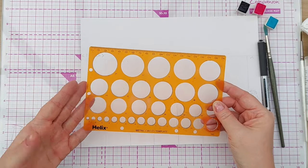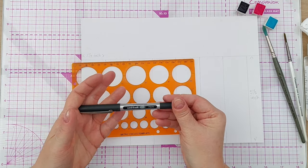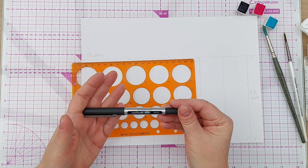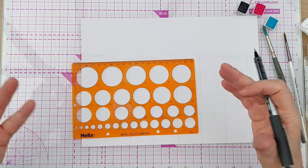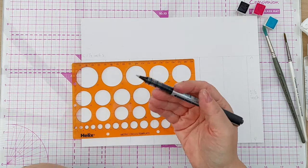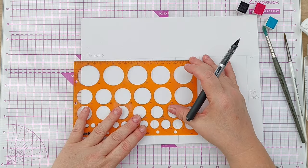So I've got a circle stencil here and a Uniball Eye Micro pen in black which is waterproof and fade proof. Obviously if you're going to put water on top of this and you don't want the ink to shift, you're going to need a waterproof pen.